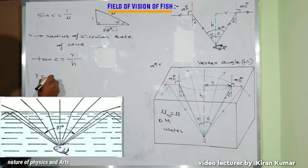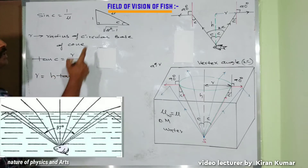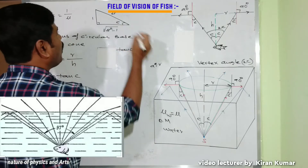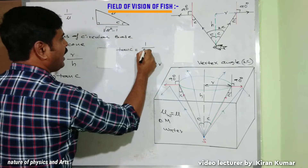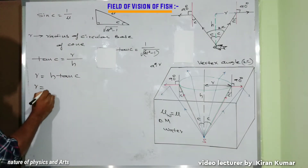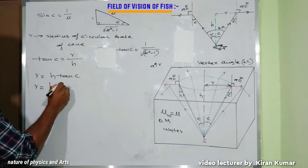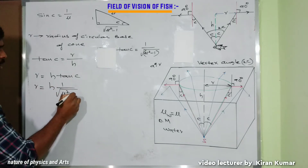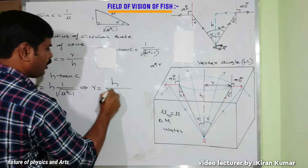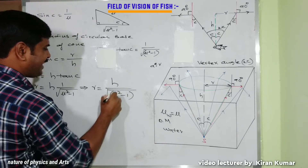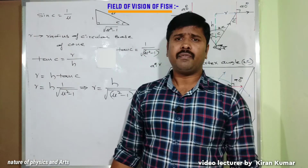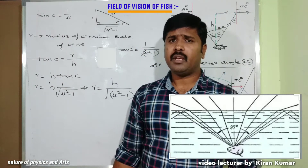Therefore r = h · tan C. From the right triangle, tan C = opposite/adjacent = 1 / √(μ² − 1). Substituting, r = h / √(μ² − 1). This is the radius of the circular base of the field of view of the fish from water to air.